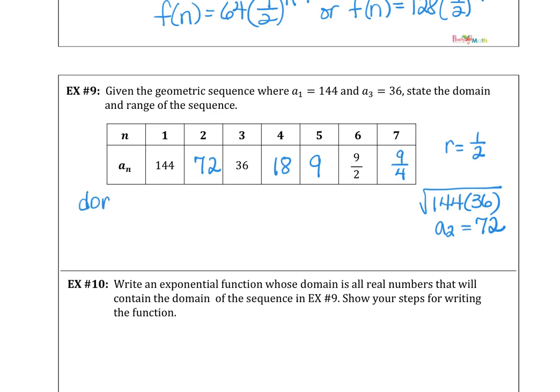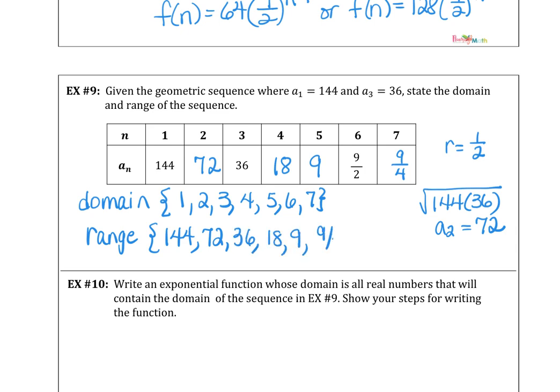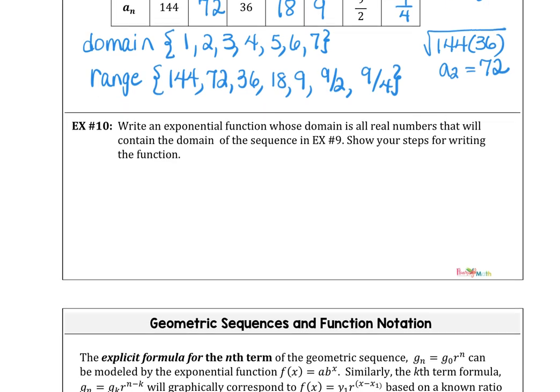But we're just listing the domain, which is a discrete set of information, just the x coordinates from 1 through 7, integer values. And then the range are the discrete y values, just the ordered pair that represents the y coordinate on our discrete data. So domain and range. It's not a continuous function. It's just discrete data points.